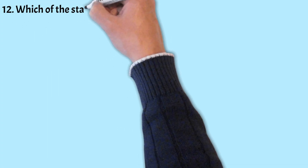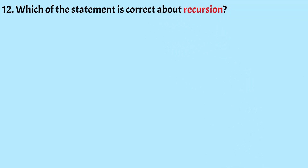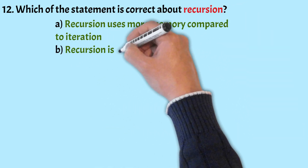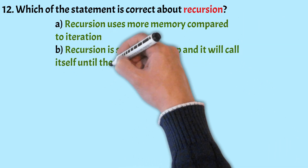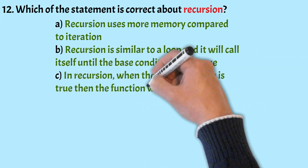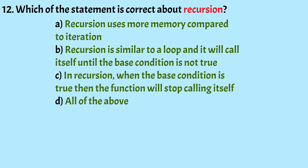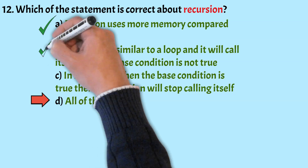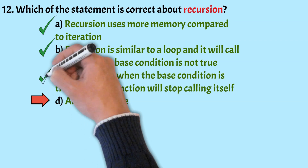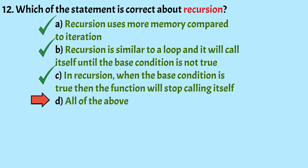The next question: which statement is correct about recursion? The options are: recursion uses more memory compared to iteration; recursion is similar to a loop and it will call itself until the base condition is not true; in recursion, when the base condition is true, the function will stop calling itself; and all of the above. The correct answer is Option D, all of the above. Recursion uses more memory compared to iteration, it is similar to a loop, calls itself until the base condition is not true, and stops when the base condition is met.